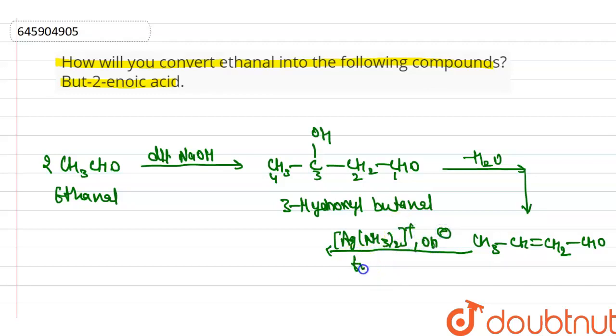The aldol condensation product has carbons numbered 1, 2, 3, 4. That reacts with Tollen's reagent.